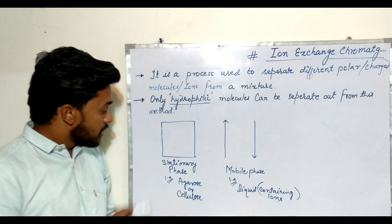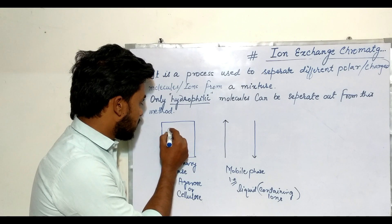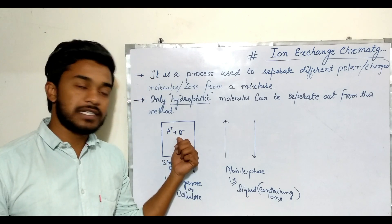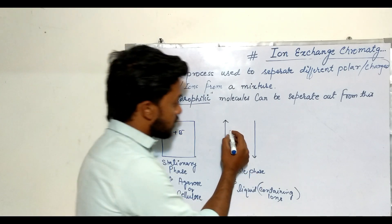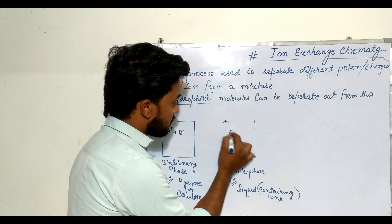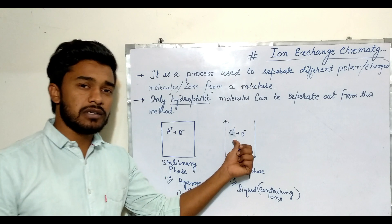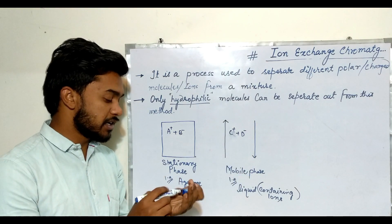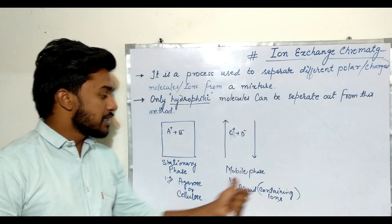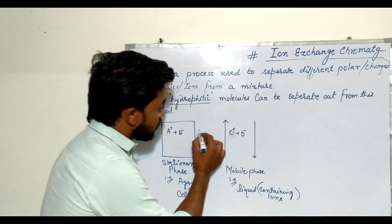Now let's take a look at how this chromatography works. The stationary phase contains different kinds of charges — let's say A positive and B negative. In the mobile phase also we have two types of charges — C positive and D negative. We are using these labels just for convenience.